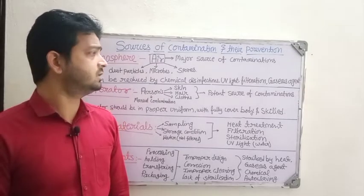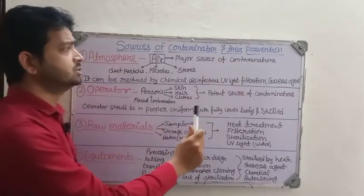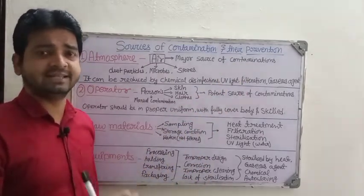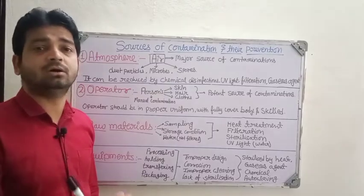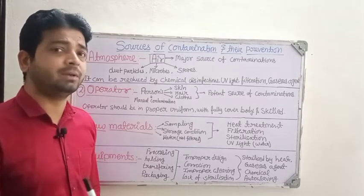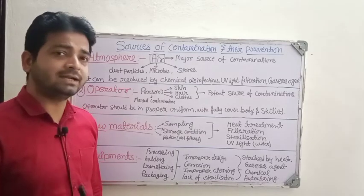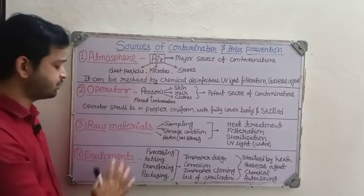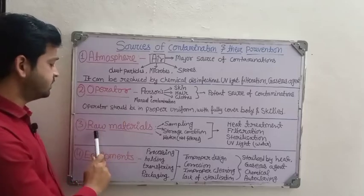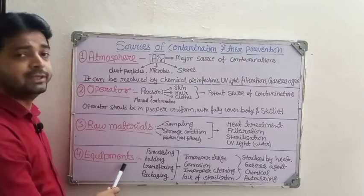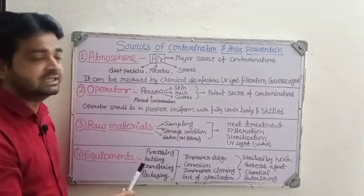Hello students, now we are going to discuss the sources of contamination and their prevention. Whenever we are maintaining any aseptic area or aseptic room, we need to know what are the sources from where our products can be contaminated and how we can prevent them. Here, majorly four types of sources we can expect: the first is the atmosphere, second is the operator, third is raw materials, and fourth is equipment. These are the sources from where microbes can interfere with your proceedings.